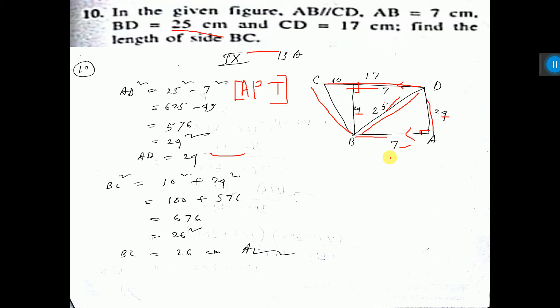Now this is 7, so this is also 7. So total length 17, if you subtract this 7, then this will come 10.